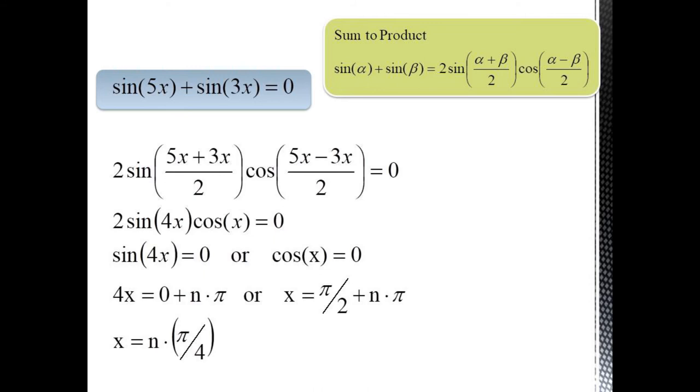We could substitute for 4x or just say that 4x equals 0 plus n times pi, which gives us x equals n times pi over 4. Cosine of x equals 0 gives us x equals pi over 2 plus n times pi. But these solutions are already included in the previous list, so our solution reduces to just x equals n times pi over 4.